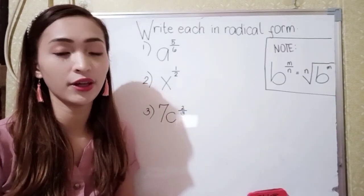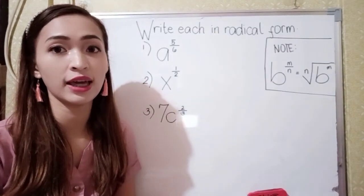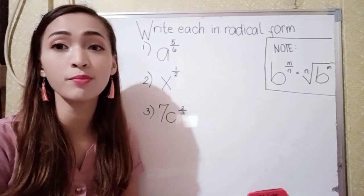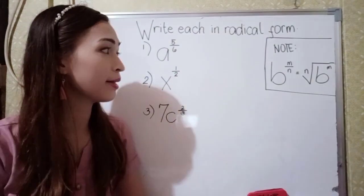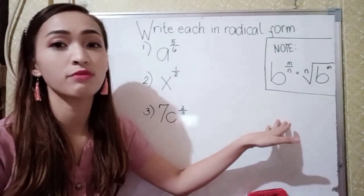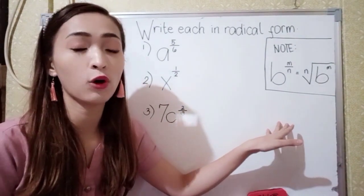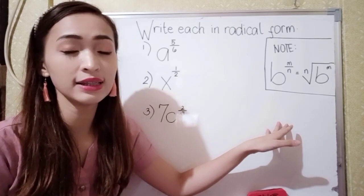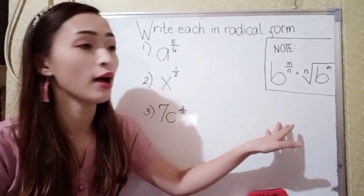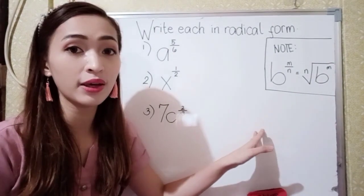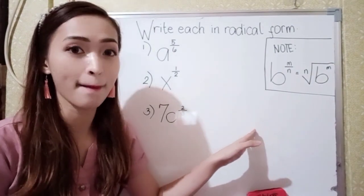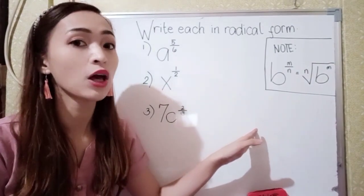For example, we have here: write in radical form. Our note is when B is raised to M over N, that is equal to the Nth root of B raised to M.